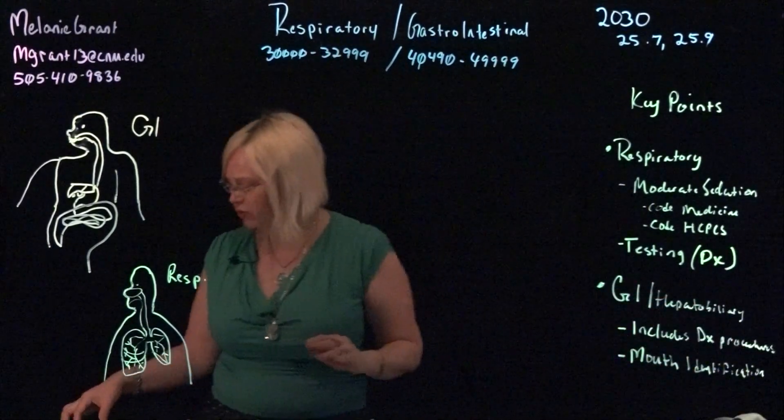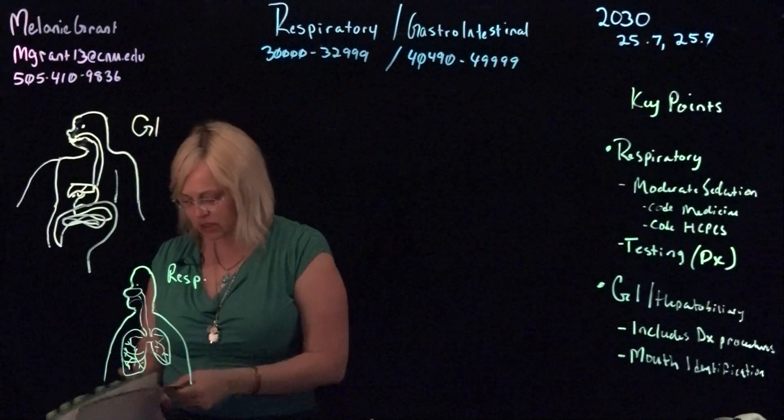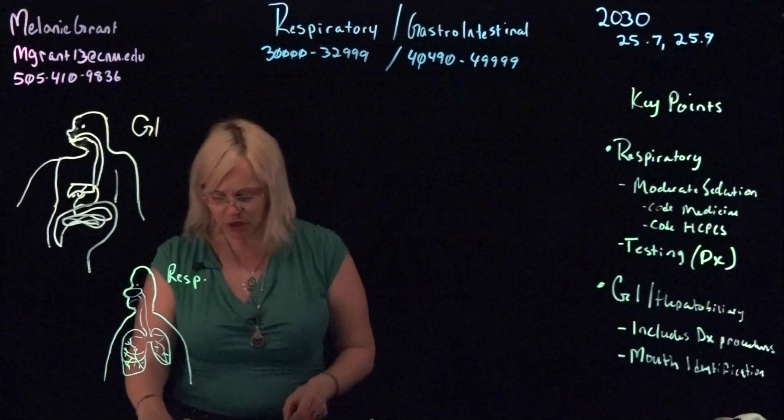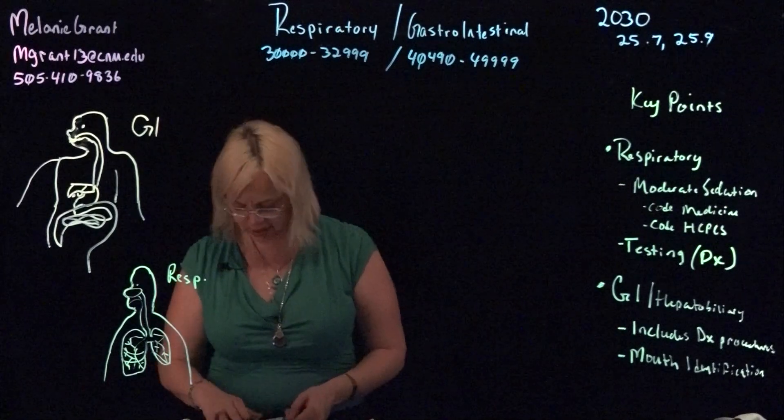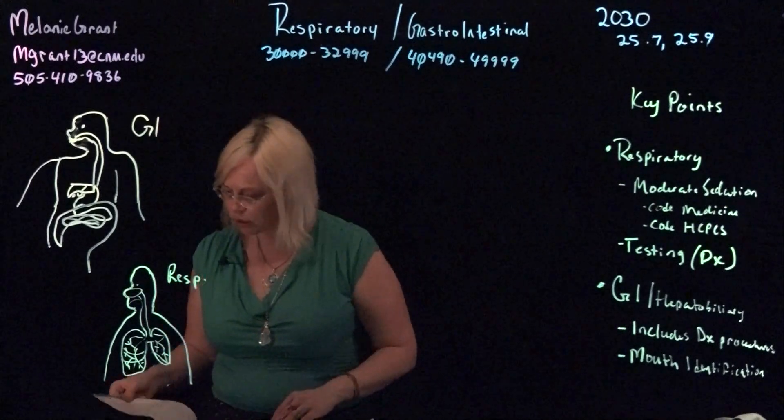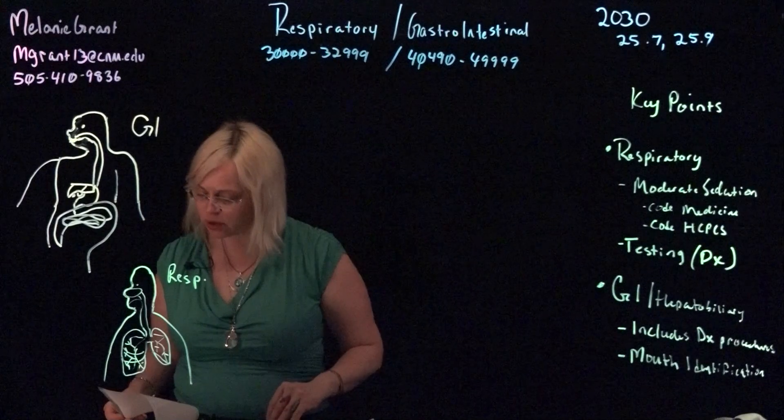Additional coding you'll find in the medical section for respiratory testing is found under the pulmonary section, pulmonary diagnostic testing and therapies on page 657 and the section starting with code 94010.